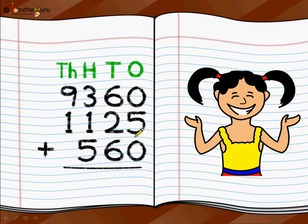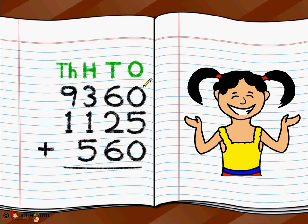So don't get afraid if the numbers are big, or if there are multiple numbers to add — like in this case, 3 numbers. Maybe you had 9360 people initially, then 1125 people came in during festival time, and 560 more came in on the last day. You again write each of these numbers in the correct place value: 1000s below 1000s, 100s below 100s, 10s below 10s, and 1s below 1s. If there are no thousands, you write a space. And then just do the addition starting from the 1s position — the rightmost digit — going towards the left.